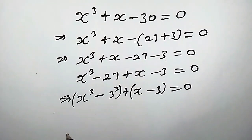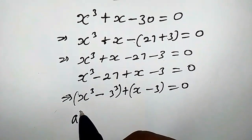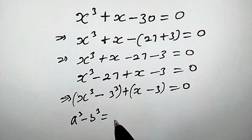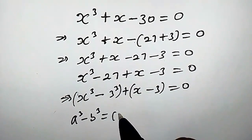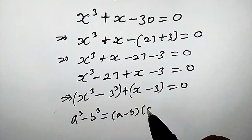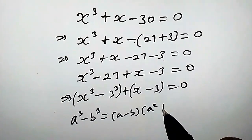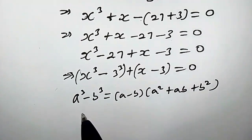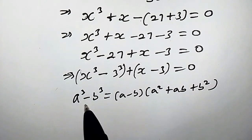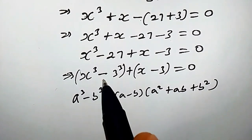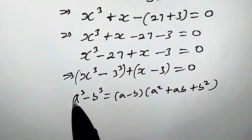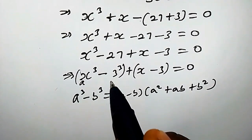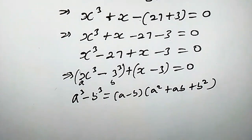Recall that whenever we have a to the power of 3 minus b to the power of 3, it is the same thing as writing a minus b, times a squared plus ab plus b squared. We are going to apply this property here. Our a is x and our b is simply 3.